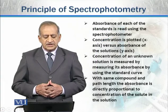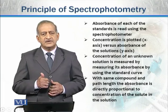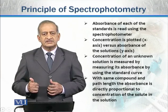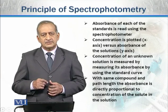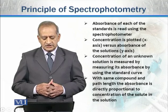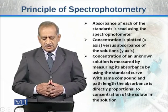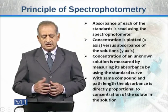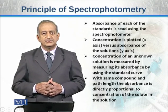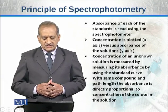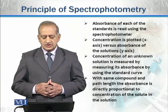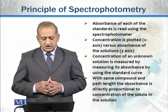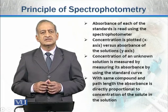The absorbance of each standard is read using the spectrophotometer. Different dilutions are made and their absorbances are measured. Concentration is plotted on the x-axis and absorbance on the y-axis, giving a straight-line standard curve. The concentration of an unknown solution is determined by measuring its absorbance, plotting it on the standard curve, and reading off the corresponding concentration. With the same compound and same path length, absorbance is directly proportional to concentration of the solute.